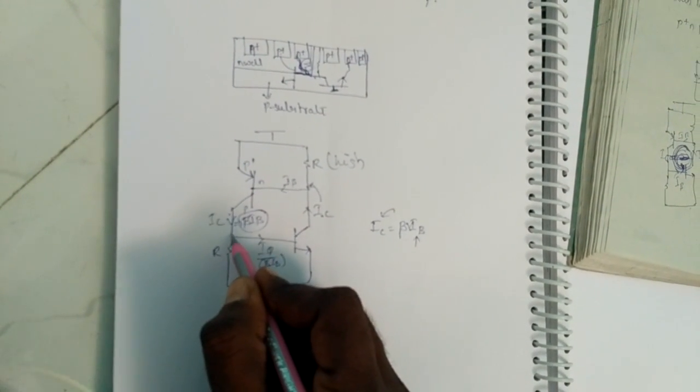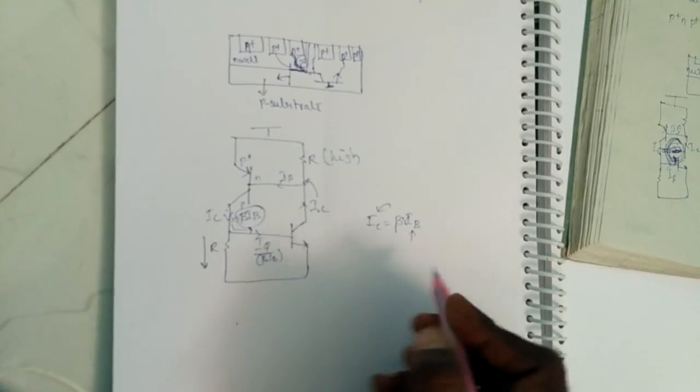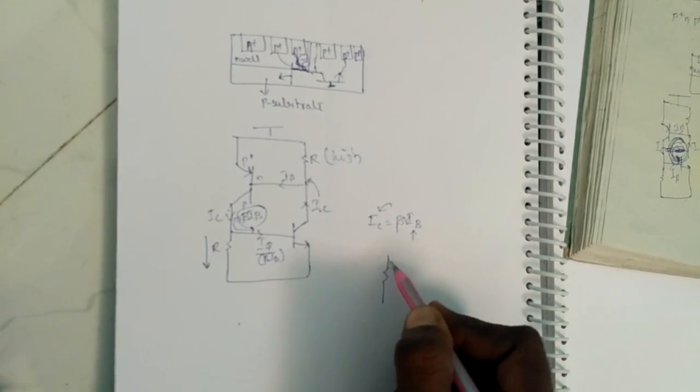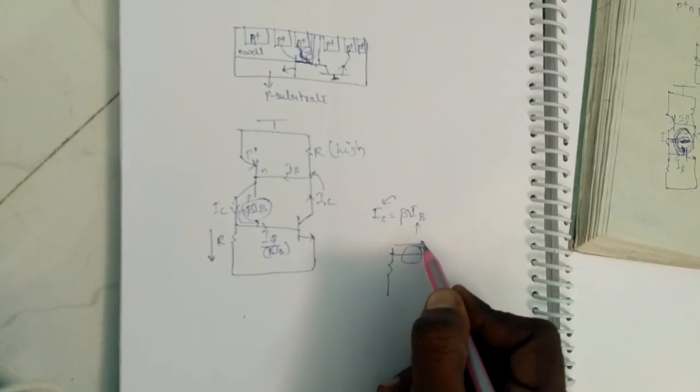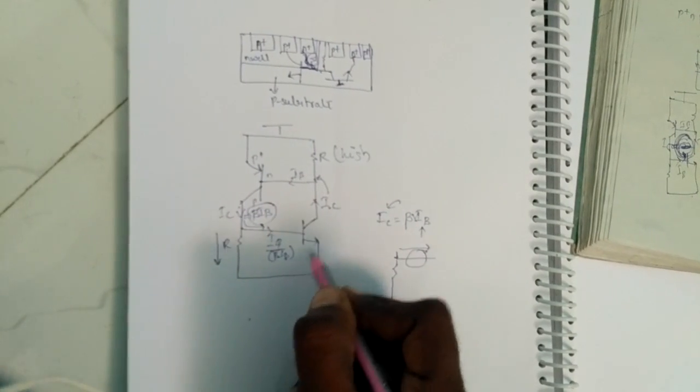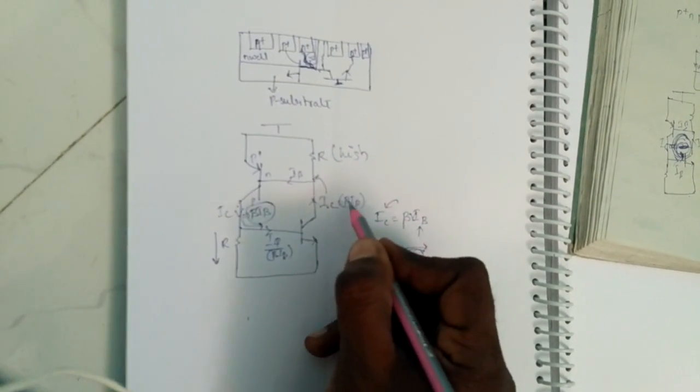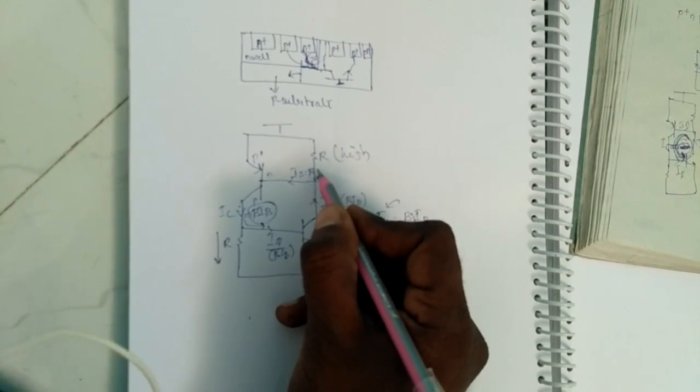Because this current will flow to this point of view, it is high resistance. Whenever we have two paths—high resistance and one short-circuited—current always chooses short circuit path, low resistance path. Otherwise, this beta into IB comes here.